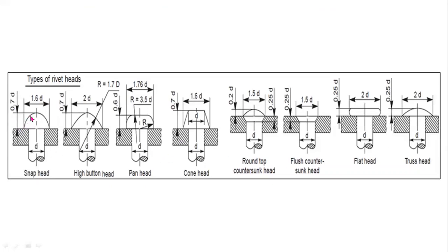This one is a snap head, this one is a high button head, this is a pan head, this is a cone head, this is a round top countersunk head, this is a flush countersunk head, this is the flat head, and this is the truss head. These are the important types of rivet heads used in industrial applications. The snap head is the most commonly used rivet head.